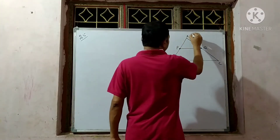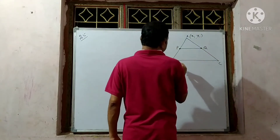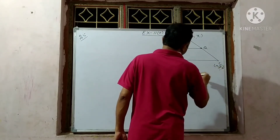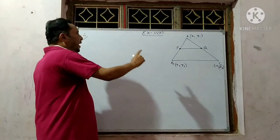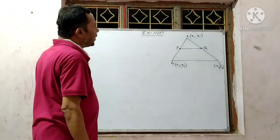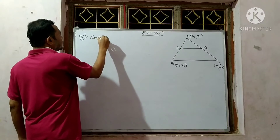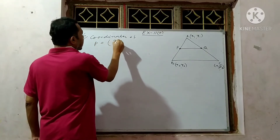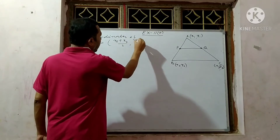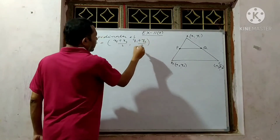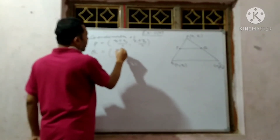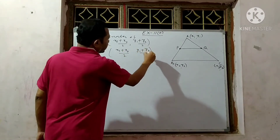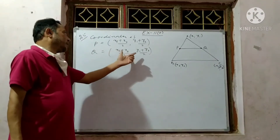Suppose the coordinates of A are (x₁, y₁), that of B are (x₂, y₂), and that of C are (x₃, y₃). Since P and Q are midpoints of sides AB and AC respectively, the coordinates of P are ((x₁ + x₂)/2, (y₁ + y₂)/2), and the coordinates of Q are ((x₁ + x₃)/2, (y₁ + y₃)/2). So the coordinates of P and Q are established.